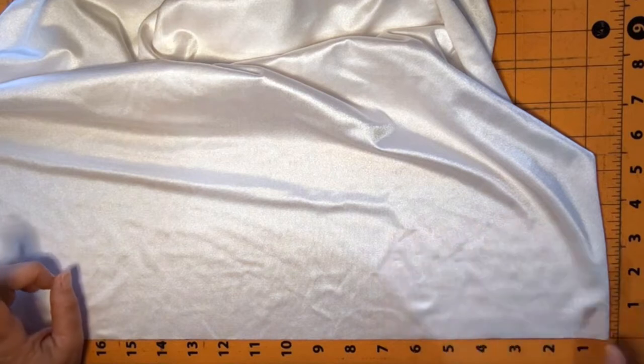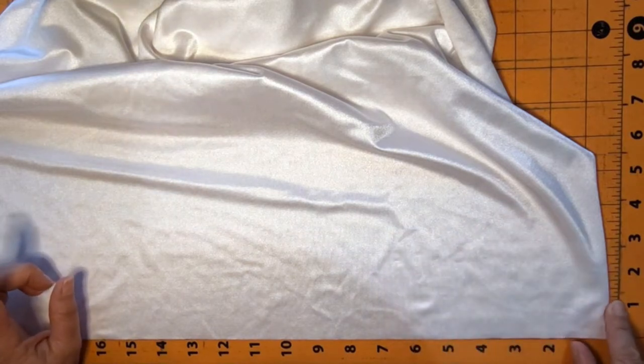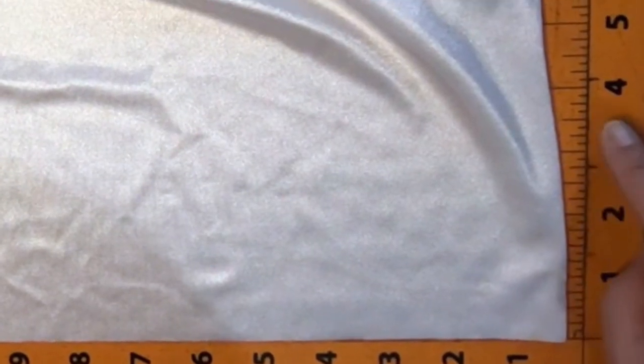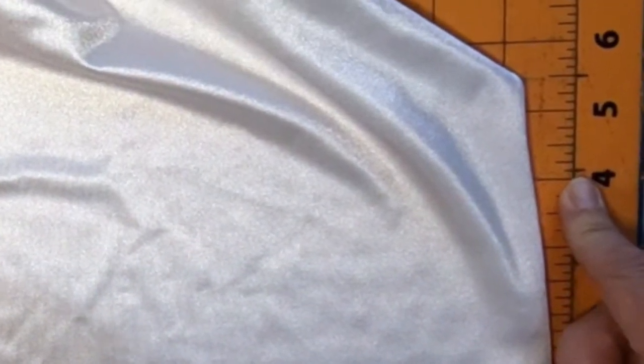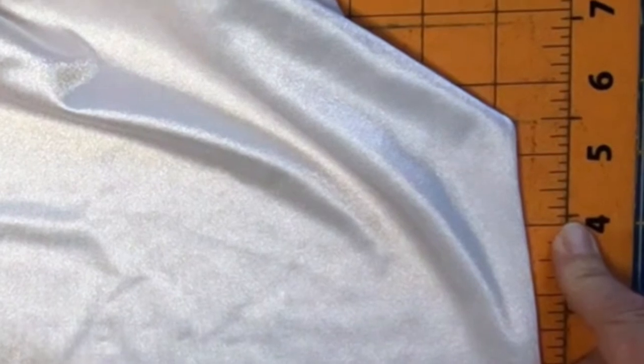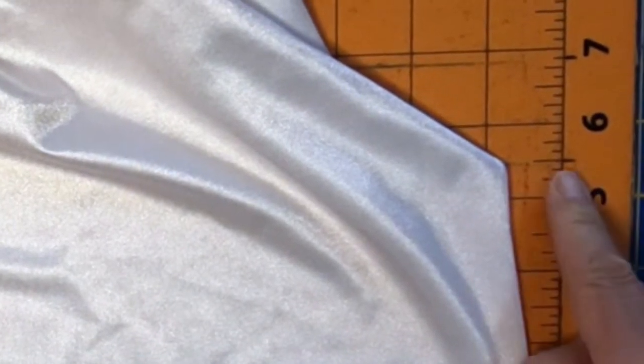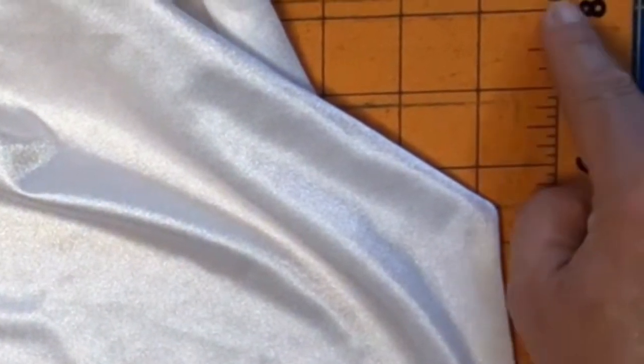If you look, you can see where I marked with a Sharpie how wide I want my binding pieces. That way I don't have to look for the measurements—they're already there every time. There are Sharpie marks all the way down my board.